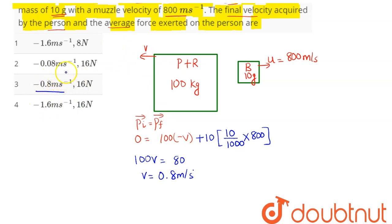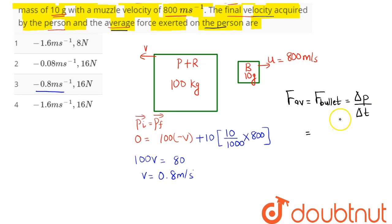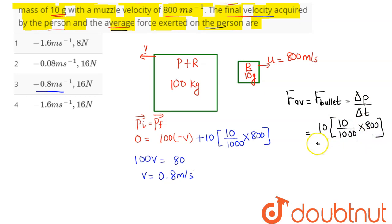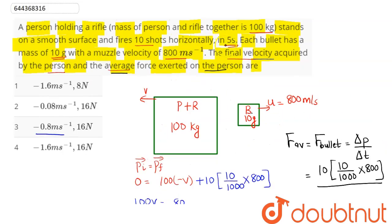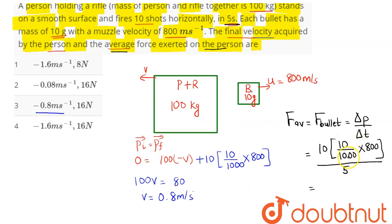To find the average force exerted on the person, we use: force equals change in momentum of the bullet divided by total time taken. Initially the bullet was at rest inside the barrel. Final momentum of 10 bullets: 10 divided by 1000 into 800, divided by time taken which is 5 seconds. This gives 8000 divided by 1000 equals 8, so 80 by 5 equals 16 newton.